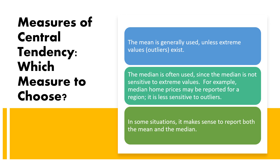How do you know which measure to choose? We generally choose the mean unless extreme values exist. If you have outliers in the data, you should not use the mean because it is sensitive to extreme values. We choose the median when extreme values are present, because the median is less sensitive — for example, median home price is often reported for a region. In some situations we can choose both mean and median.